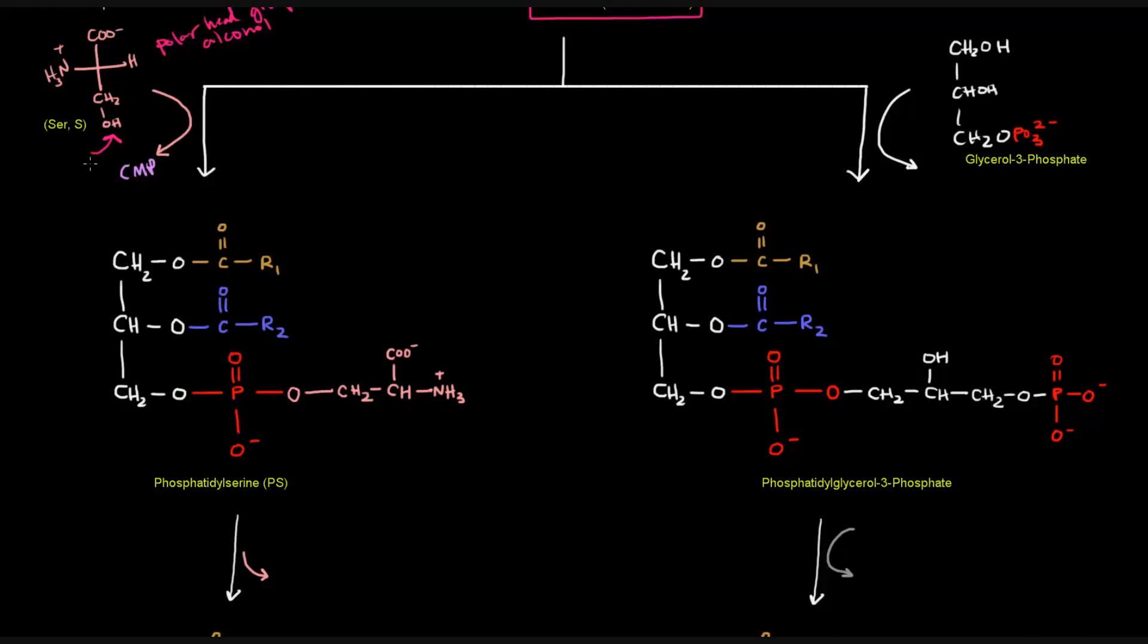That gives us phosphatidylserine, which is basically a glycerophospholipid. The enzyme that catalyzes this step is called phosphatidylserine synthase, which makes sense. It's making phosphatidylserine.